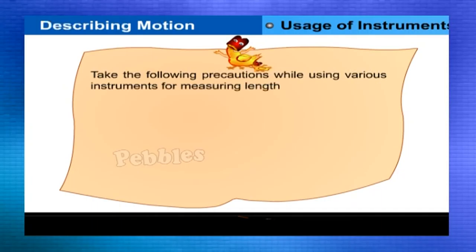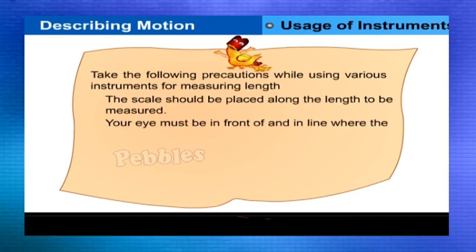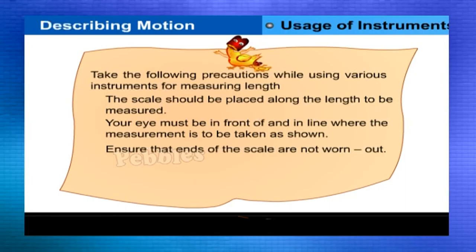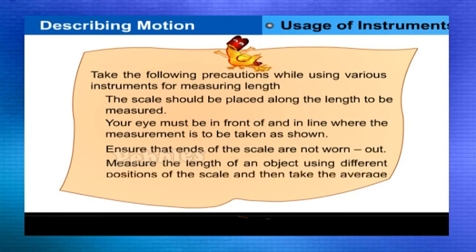Proper use of instruments. Take the following precautions while using various instruments for measuring length: the scale should be placed along the length to be measured. Your eye must be in front of and in line where the measurement is to be taken as shown. Ensure that ends of the scale are not worn out. Measure the length of an object using different positions of the scale and then take the average of these measures.